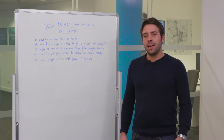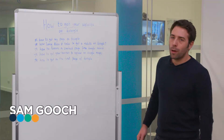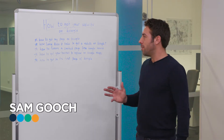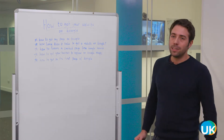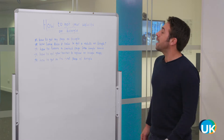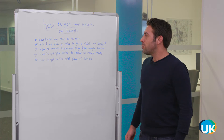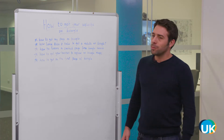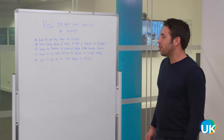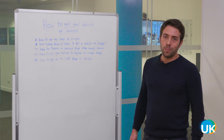Hello and welcome to the UK Domain. Today I'm going to be looking into how to get your website on Google. That's made up of five different sections: how to get an individual page on Google, how long it takes to get a website on Google, how to remove a cached page from Google Search, how to get your business to appear on Google Maps, and finally, how to get on the first page of Google.